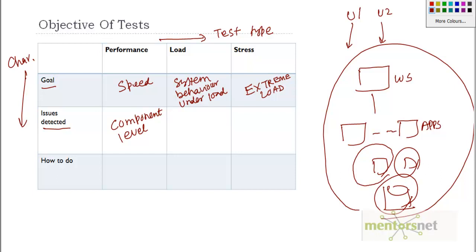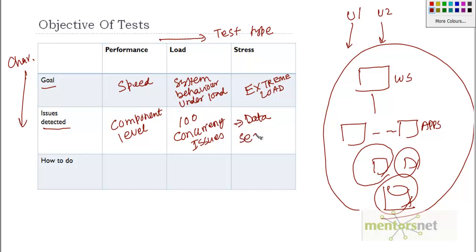When running a load test, the kind of issues you detect are things like whether a hundred concurrent users can use the system — these are called concurrency issues. In stress testing, one issue we detect is whether any data corruption is happening under extreme load. We also check for security vulnerabilities: for example, if one server goes down under stress, is there a possibility of intrusion into the system?